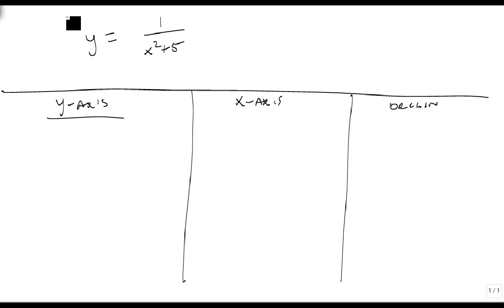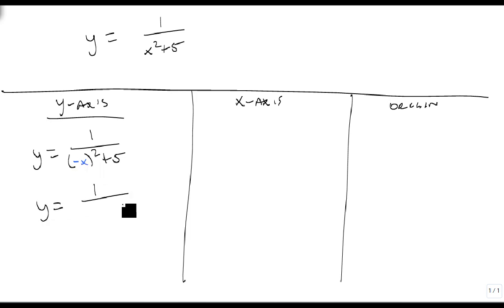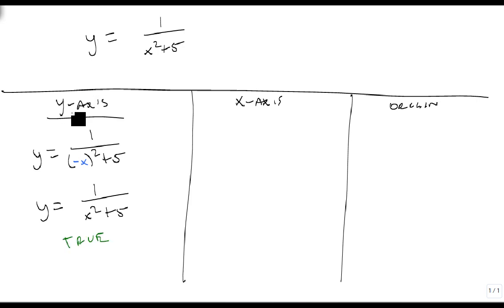For y = 1/(x² + 5), we begin the y-axis test. Wherever we see an x, we replace it with -x. When we square -x, we get (-x)(-x), and a negative times a negative is a positive. So this comes out as true — this equation is symmetric over the y-axis.